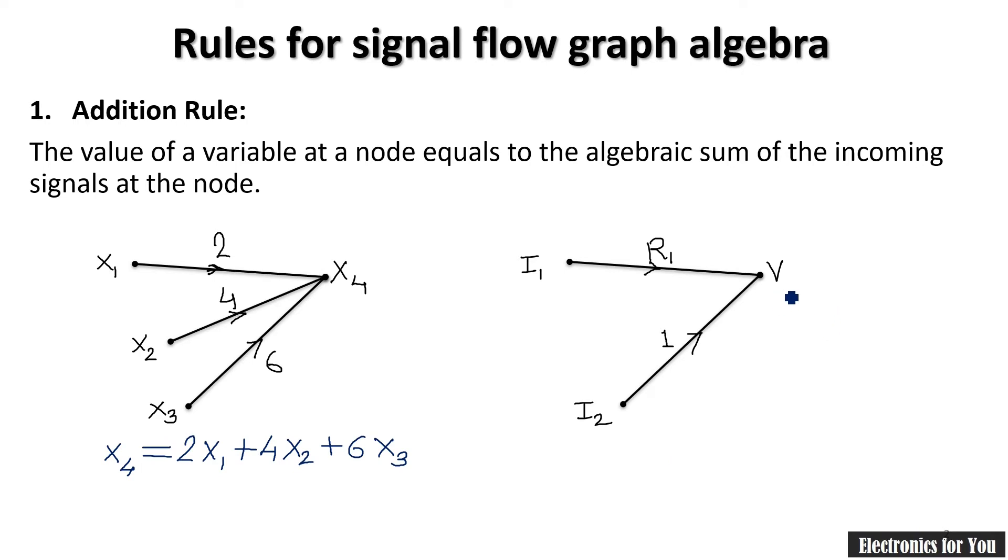Similarly here we can write the equation for V. V is equal to R1 multiplied by input. Input is I1, so I1R1 plus 1 multiplied by I2 means I2. This is the equation for voltage V. This is our first rule, the addition rule.